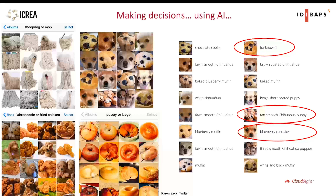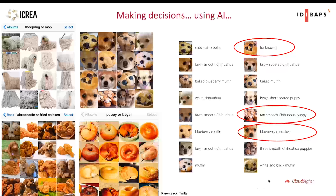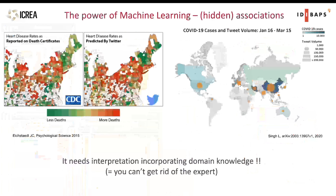This is a problem because when it's a Google image label and the algorithm is wrong, you don't care so much. But if it's a decision on a patient that has implications for therapy, even small errors can make a big difference.